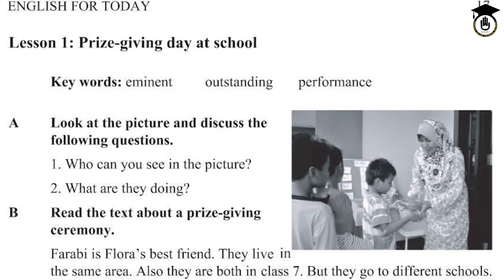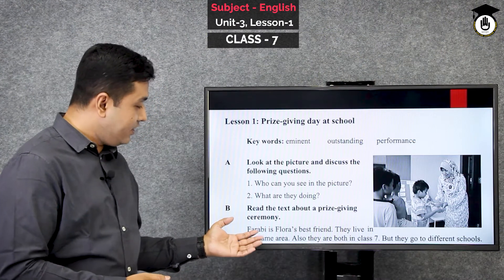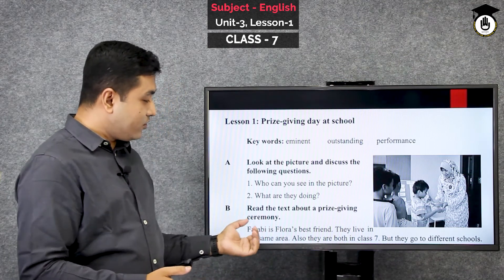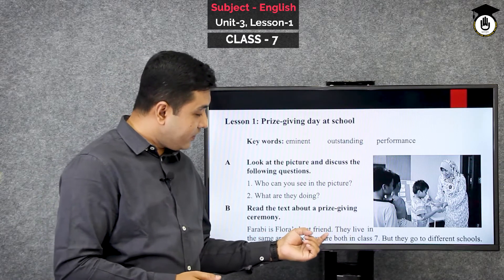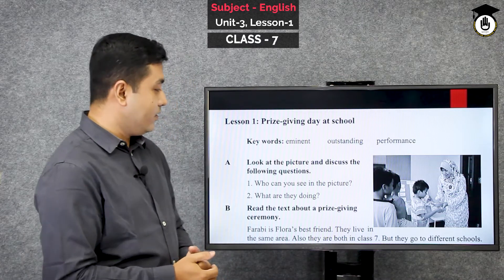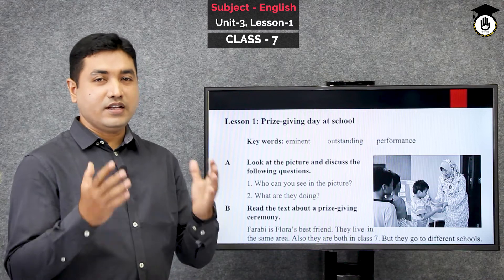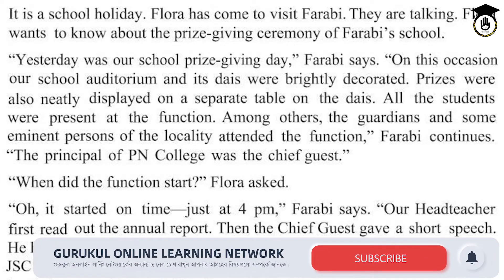Farabi is Flora's best friend. Farabi hocche Flora-r opore ke bhalo bondu. Aamader anek-e rahi hoi to bondu thakte parei. Anek bondu thakte parei, kintu dekhe aek jon hoi to khubi bhalo bondu ba khubi close. They live in the same area. Also, they are both in class 7. But they go to different schools. It is a school holiday. Flora has come to visit Farabi.